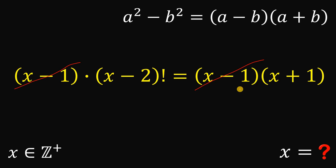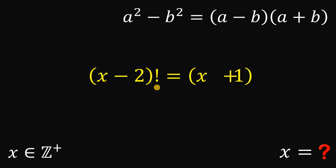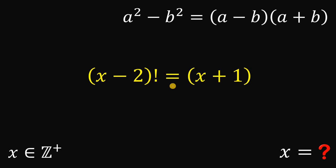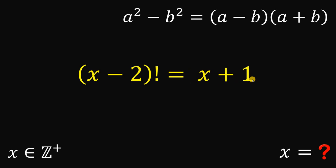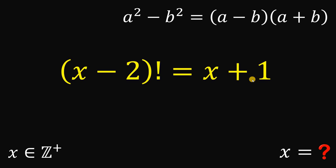Our equation now simplifies to: x minus 2 factorial equals x plus 1. Let's focus on this equation.